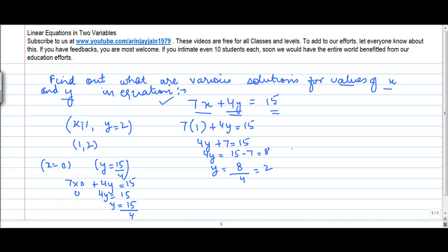Now, let's say y is equal to 0. Then we get 7x plus 4 into 0 is equal to 15, or 7x, this will be 0, is equal to 15. Therefore, x is equal to 15 divided by 7, so the solution becomes (15 by 7, 0).